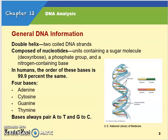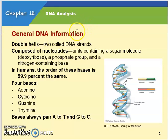So general DNA information — this should be a review. We know that DNA is a double helix, which means it's two coiled strands. It's sometimes referred to as a twisted ladder structure and it is composed of nucleotides. There are four different nucleotide bases: adenine, thymine, cytosine, and guanine, which each contain a sugar called deoxyribose, a phosphate group, and a base. The full name of DNA is deoxyribonucleic acid.